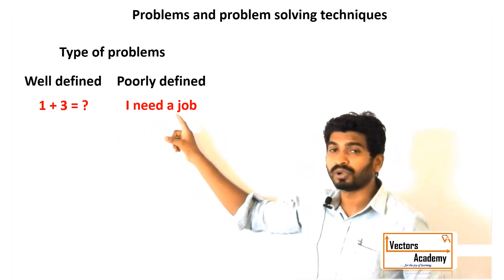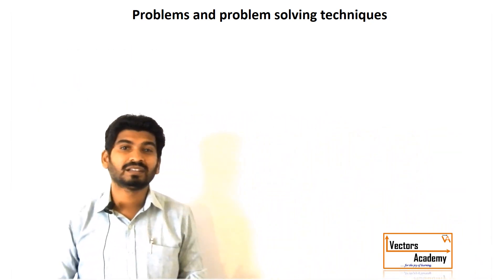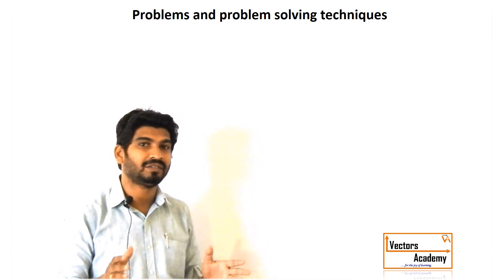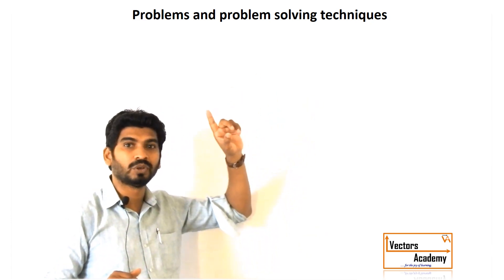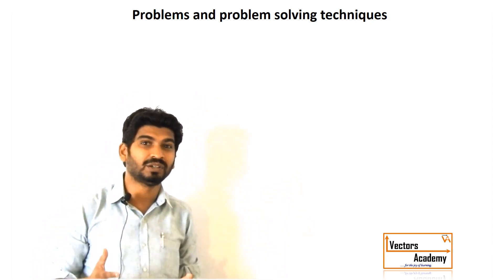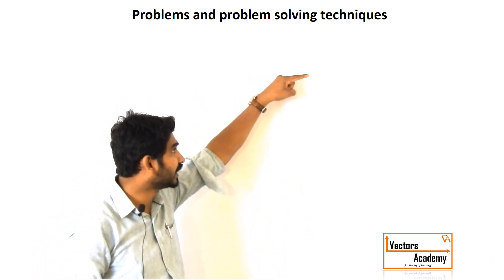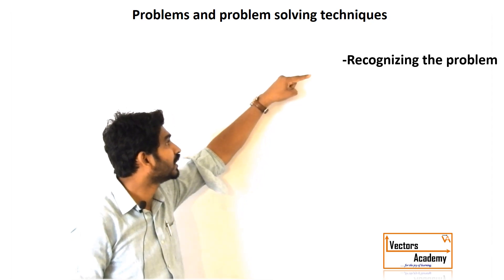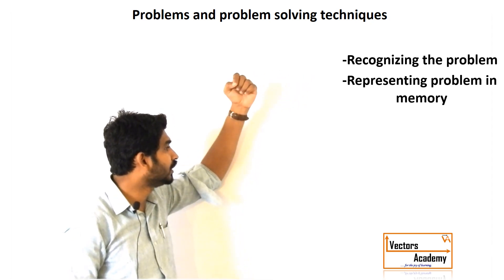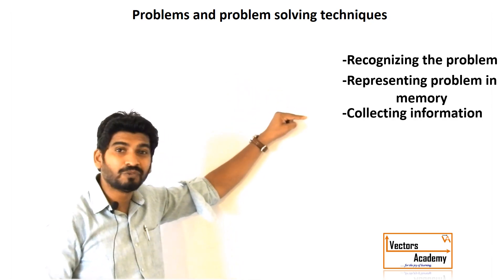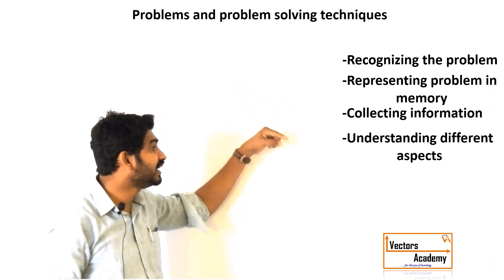Now let us look at some mental processes people go through before moving on to problem solving. The different mental processes involve: first, recognizing a problem; second, representing a problem in memory; and third, collecting relevant information about the problem.